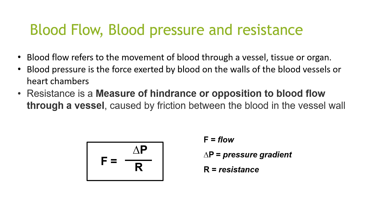Some definitions we need to go through before we continue. Blood flow refers to the movement of blood through a vessel, tissue or organ. Blood pressure is the force exerted by blood on the walls of the blood vessels or heart chambers. Resistance is defined as a measure of hindrance or opposition to blood flow through a vessel caused by friction between the blood and the vessel wall. The formula is: flow equals pressure gradient divided by resistance.